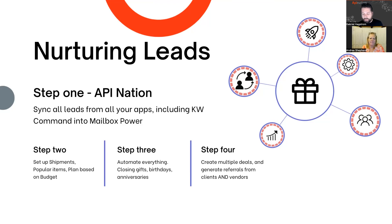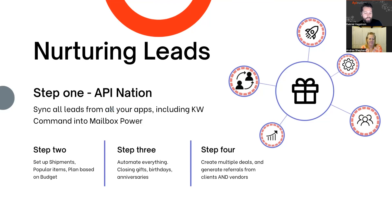If you're getting a lot of people from a certain area, get those agents on there and send them a nice gift card — like a Starbucks gift card every so often when they send you a referral, just to say thanks. So step one: go to the KW marketplace and sync up Mailbox Power to KW Command. Then grab some shipments you like, automate them, and start getting those deals.